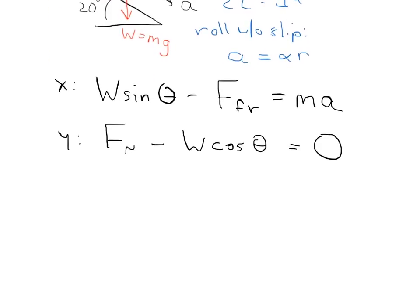Finally, we want to write down all of the torques. So the sum of the torques is just equal to r times the force of friction, and that's equal to I times the angular acceleration, the moment of inertia times the angular acceleration.